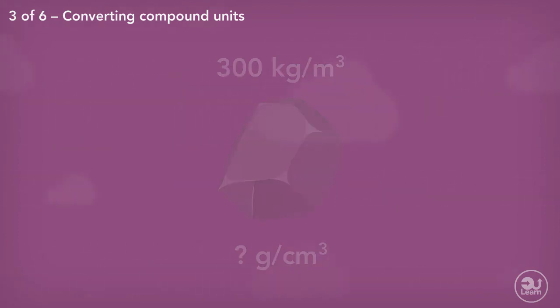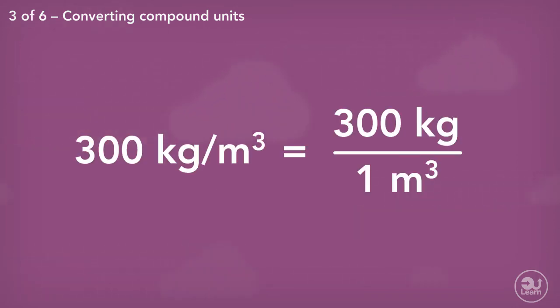Another example. A stone has a density of 300 kilograms per meter cubed. Convert 300 kilograms per meter cubed to grams per centimeter cubed. Like previously, we change our values into a fraction, which is 300 over 1. This shows that there are 300 kilograms per 1 meter cubed.